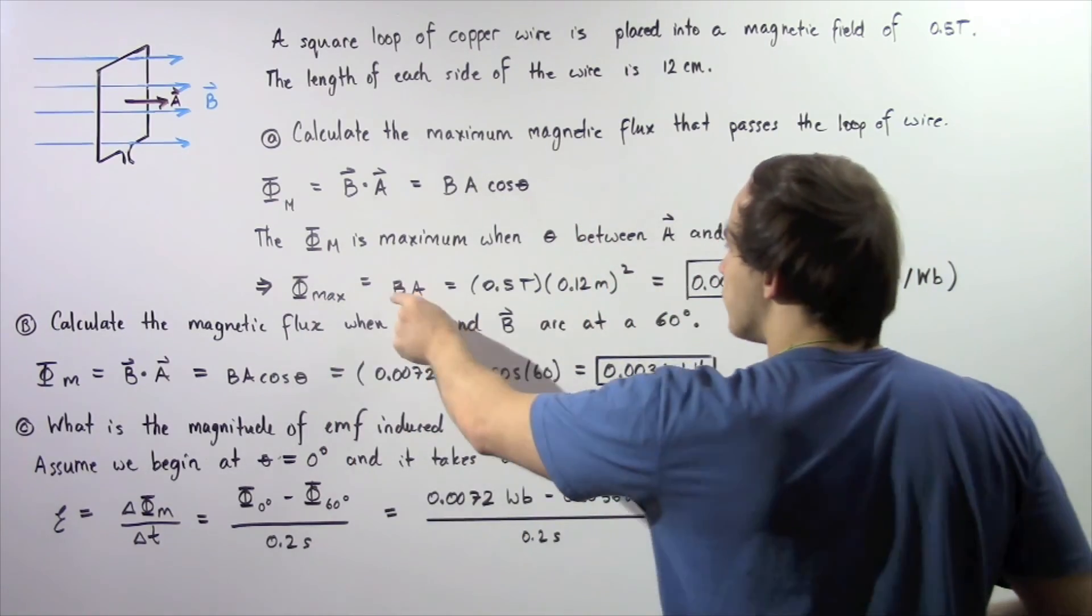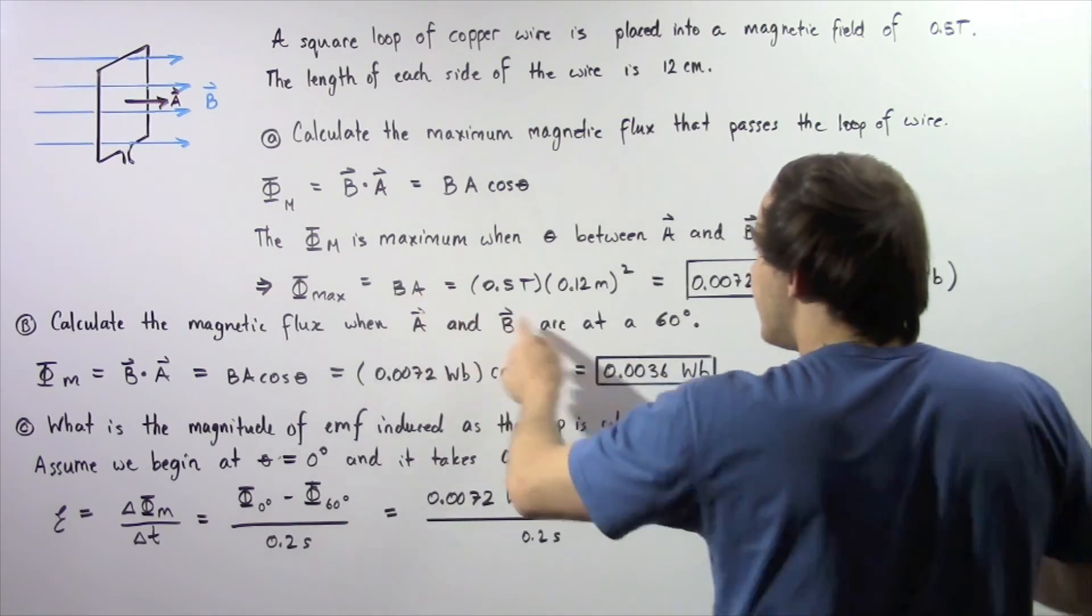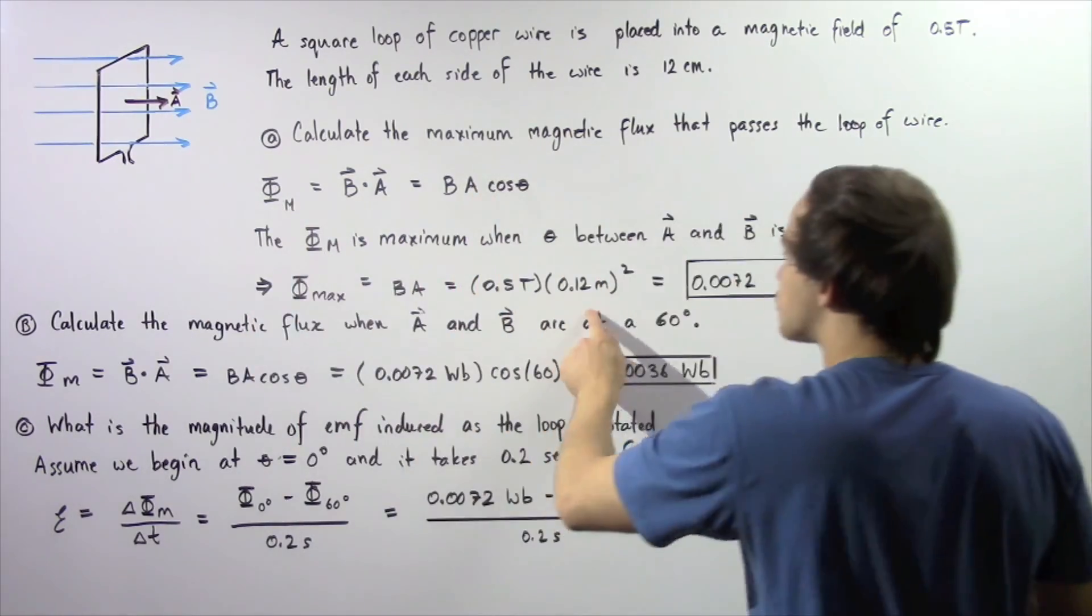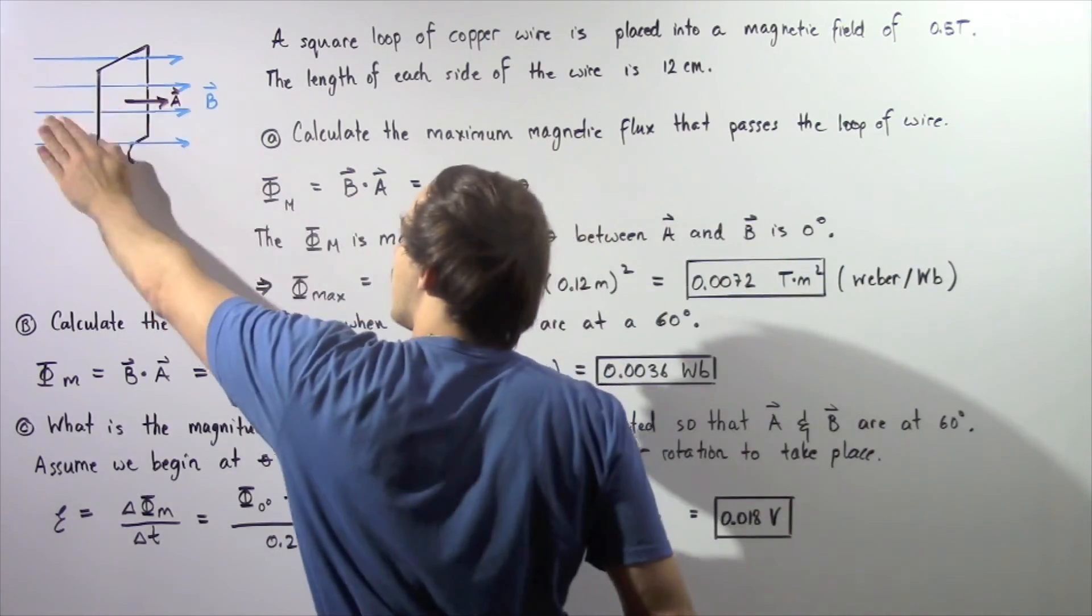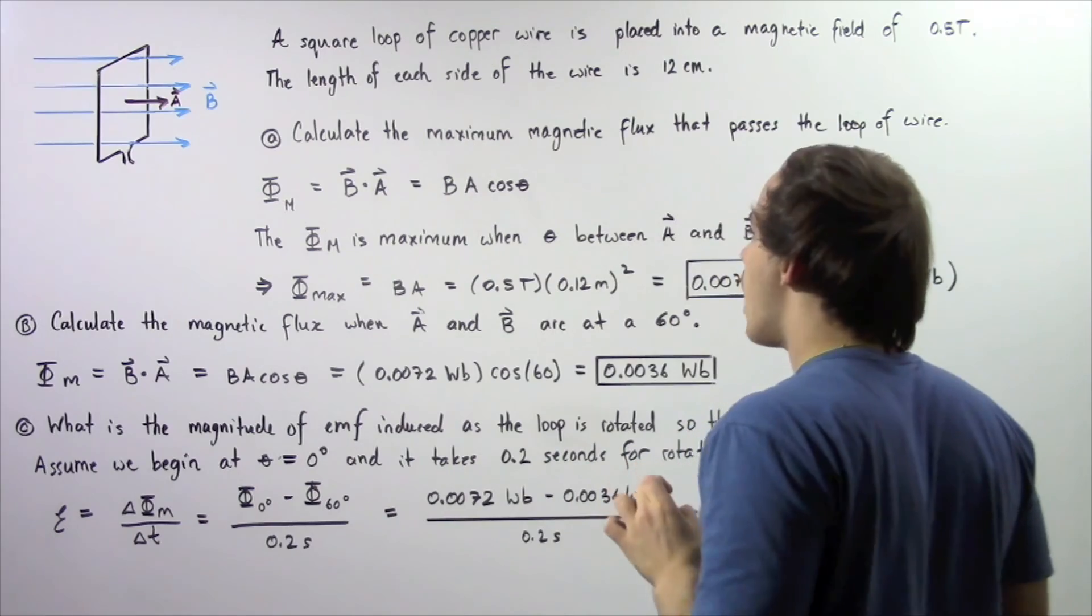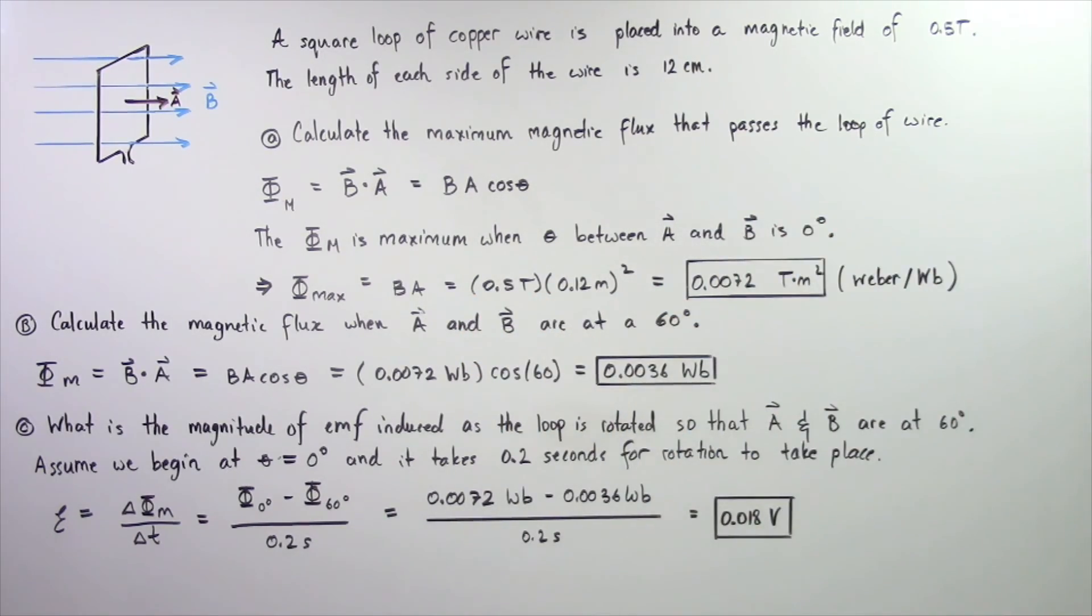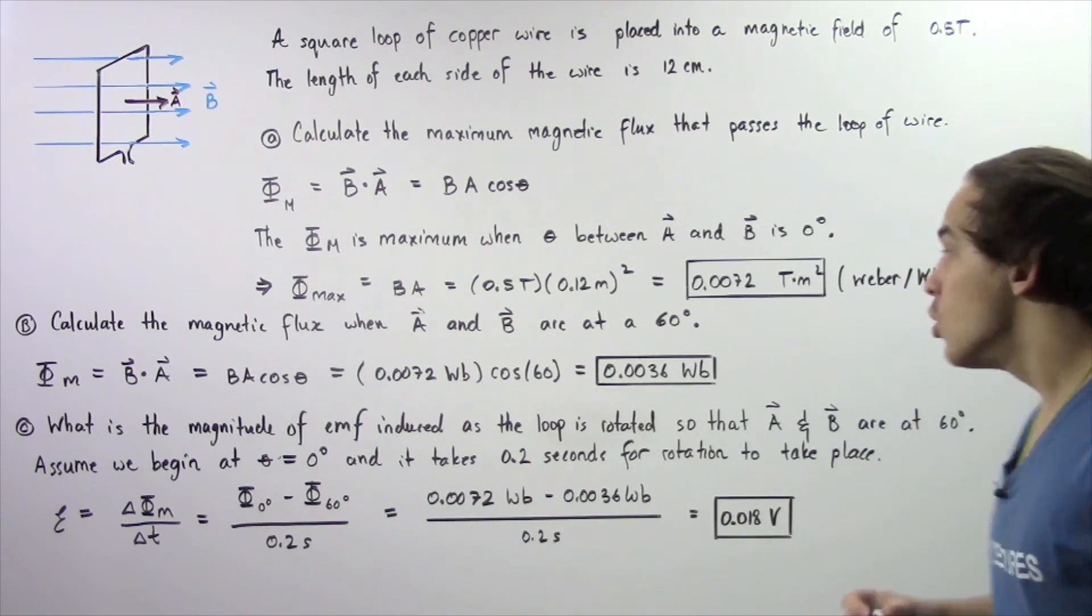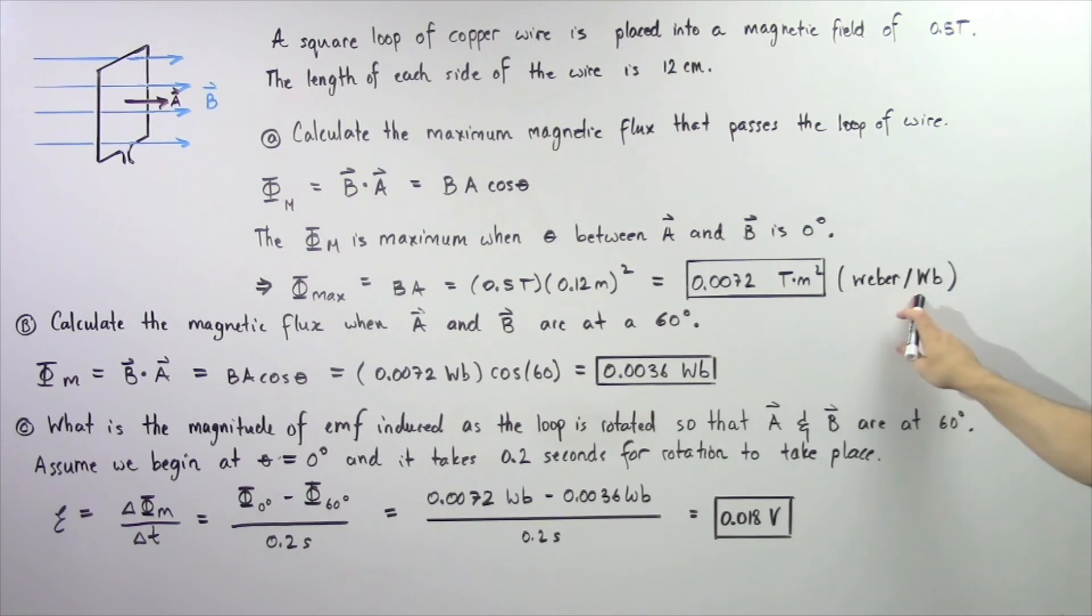So the maximum magnetic flux is equal to the product of B and A, where B is 0.5 teslas and A is simply the side length squared. So 0.12 meters squared gives us the area of our copper loop of wire. So this multiplied by this gives us a magnetic flux of 0.0072 teslas multiplied by meters squared, where this unit is commonly known as the Weber, given by WB. Now let's move on to part B.